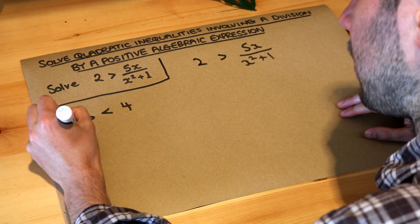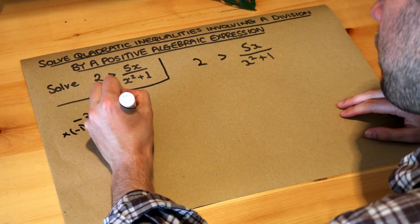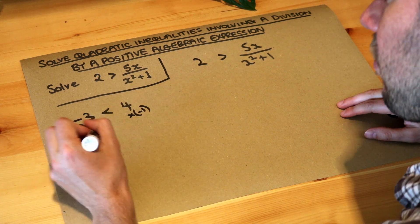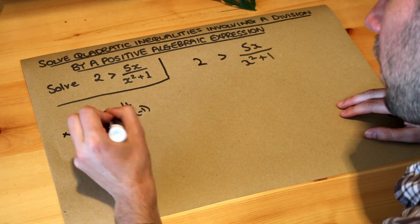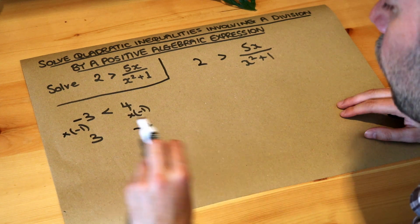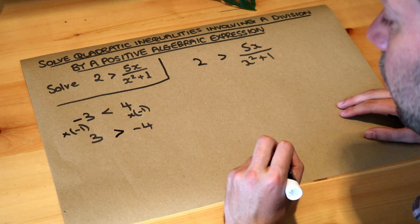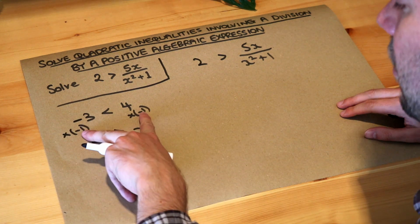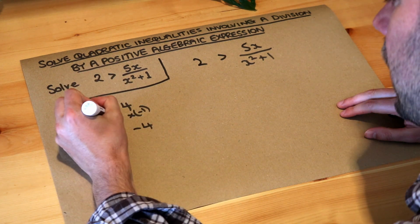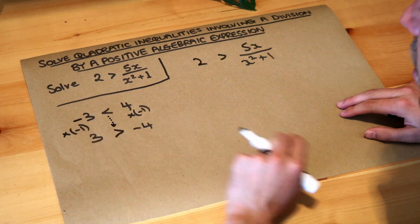If I was to multiply both sides of the inequality by minus one, the minus three becomes plus three and the four becomes minus four, and it's no longer true that three is less than minus four because three is actually bigger than minus four. So just be careful if you times both sides by a negative number it actually reverses the direction of the inequality.